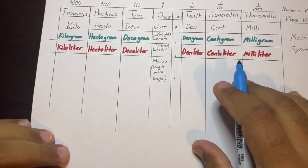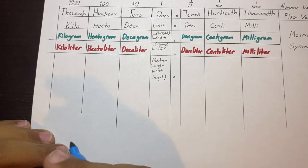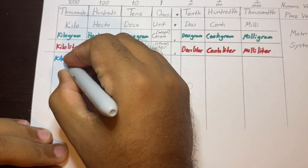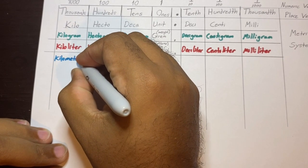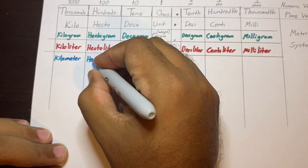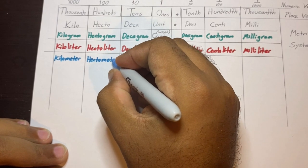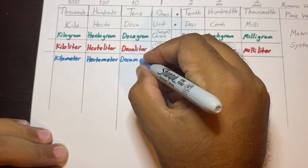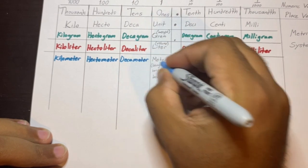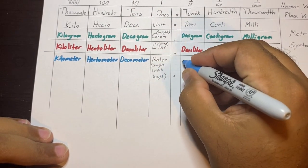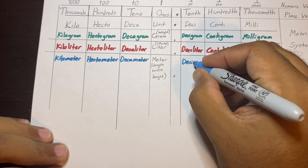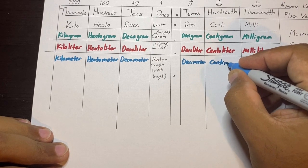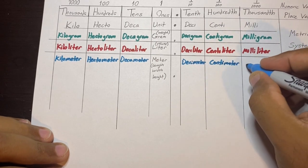We'll go with meters now — same process, the prefix at the beginning and then meter at the end. So we have kilometer, hectometer, decameter. Meter is by itself. Then we have decimeter — please do not decimate anything — then centimeter and millimeter. These are separate measurements, separate units of measurement, and that's what you need to be familiar with.